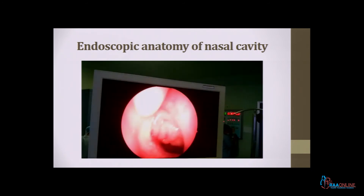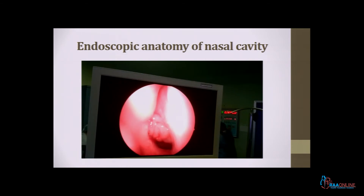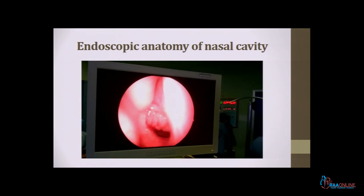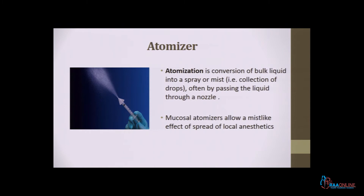It is very important that when you pack, the cotton soaked in lidocaine should go posteriorly and touch the splenopalatine ganglion. Next is an atomization device — atomization is the conversion of bulk liquid into a spray or mist. The local anesthetic is sprayed into multiple tiny spots so that absorption and topicalization are easier and more effective with a lesser amount of local anesthetic.